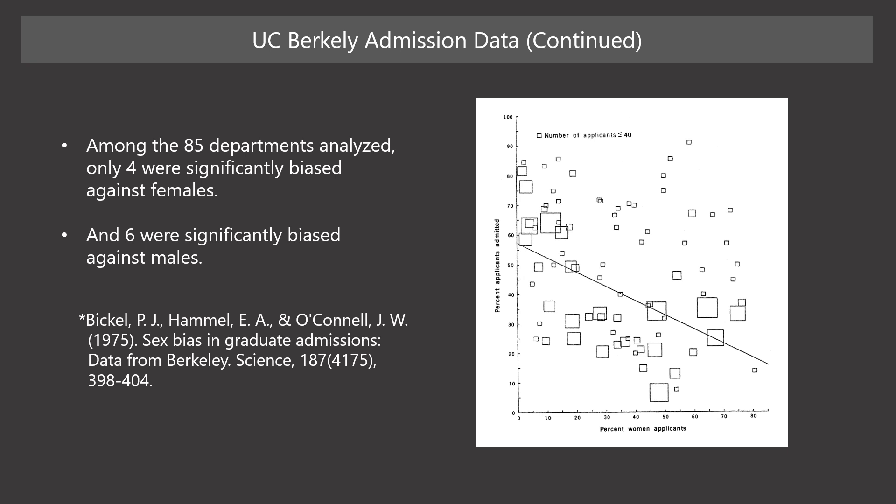The scatter plot shows a weak negative relationship between the two variables. On average, the proportions of female applicants were high in departments that are hard to get into, and low in those easy to get into. Besides, this tendency is more pronounced in departments with large numbers of applicants.